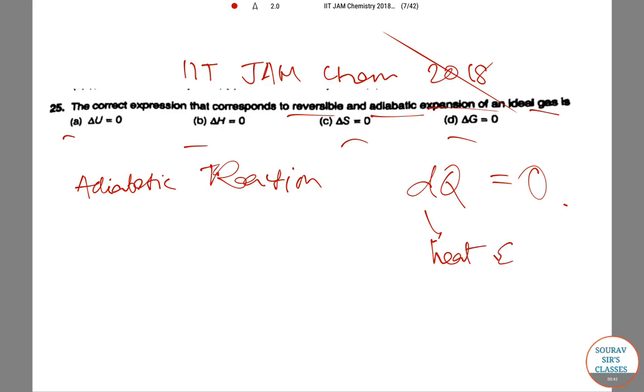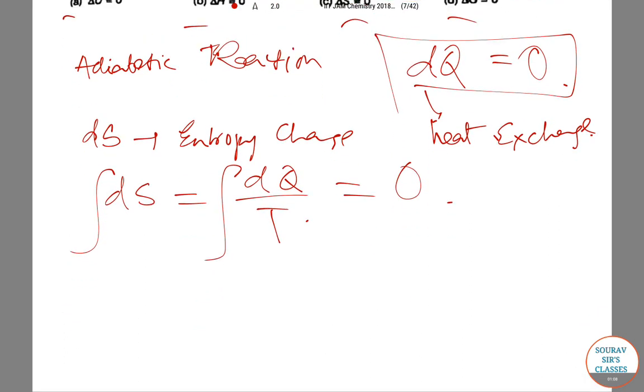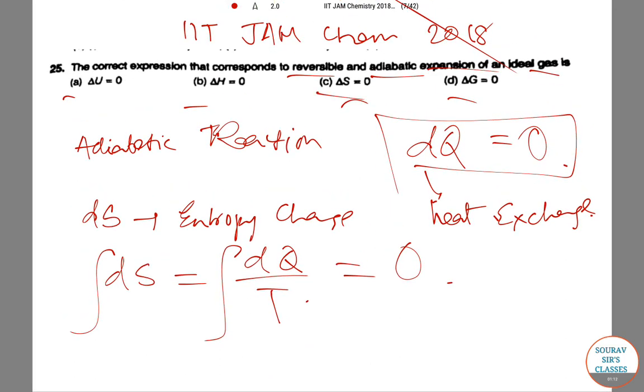This will be 0. And we know that dS (or entropy change) equals dQ by T. Hence, integration of dS equals integration of dQ by T, which will be, since dQ equals 0, 0 subsequently. As a result, the ΔS portion will also be 0. So the answer will be option number C, because in an adiabatic reaction.